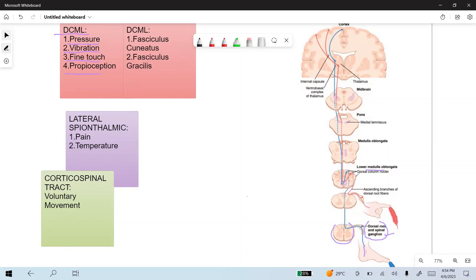What happens at the level of the medulla? These fibers cross over to the opposite side. So, any lesion above the medulla affects the contralateral side of the body, while any lesion below the medulla affects the ipsilateral side of the body.